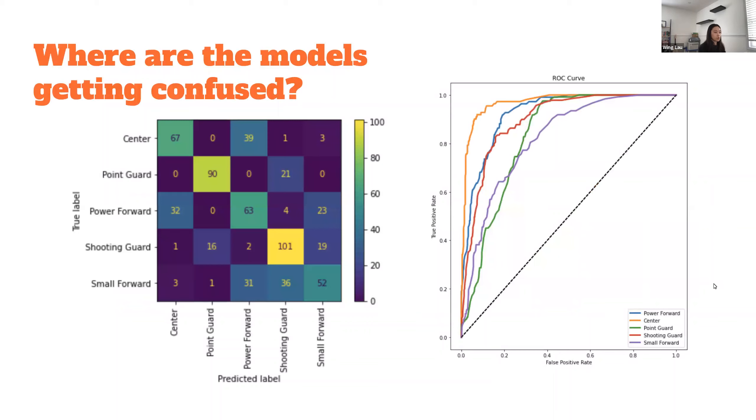For my models, I've tried random forest as well as logistic regression. For the confusion matrix and the ROC curve that you're seeing here, it's for my baseline random forest model. For the most part, these charts are very similar across all the different models that I've tried.